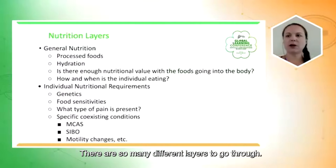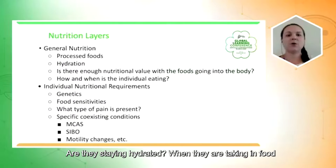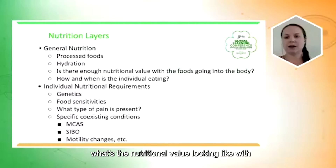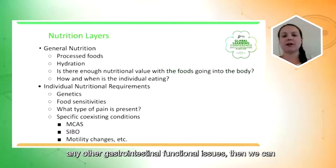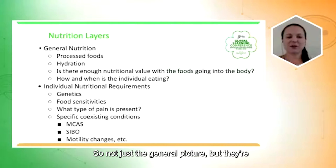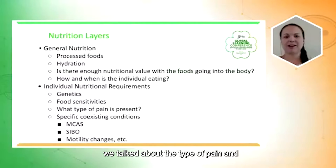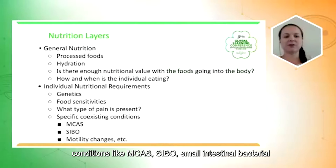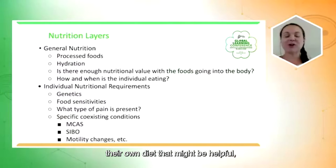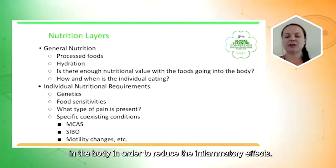There are many layers to nutrition. Are we trying to keep inflammation low? How are they with processed foods? Are they staying hydrated? What's the nutritional value of the foods they can handle, and when and how are they eating — especially if dealing with dysautonomia or gastrointestinal functional issues? Individually, patients will differ based on genetics, food sensitivities, type of pain, and coexisting conditions like MCAS, SIBO (small intestinal bacterial overgrowth), and motility changes — each of which comes with its own dietary considerations for reducing inflammatory effects.